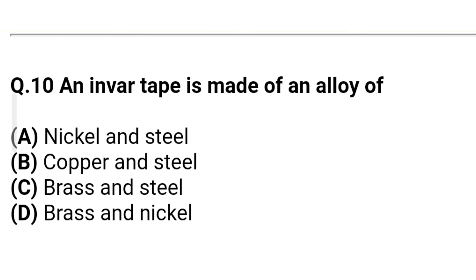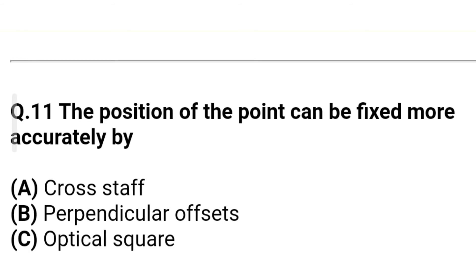Question 8: An invar tape is made up of an alloy of — Option A: nickel and steel. Option B: copper and steel. Option C: brass and steel. Option D: brass and nickel. The correct answer is Option A — nickel and steel.